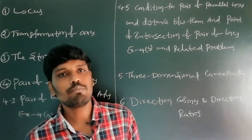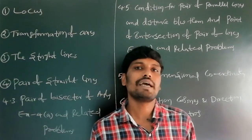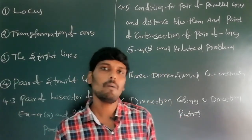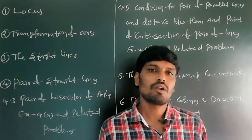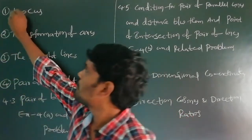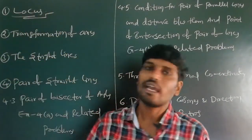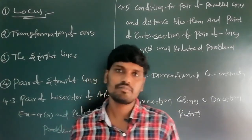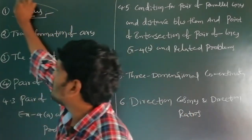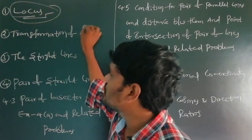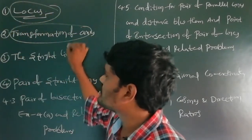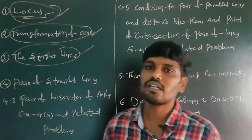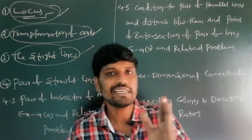In Mathematics 1B, there are a total of 10 chapters. The first chapter is Locus. In Locus, no topic is deleted. Locus, Transformation of Axes, and Straight Lines — in these 3 chapters, no topic has been deleted.